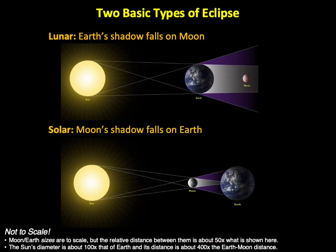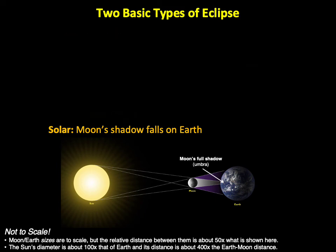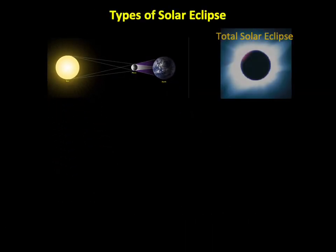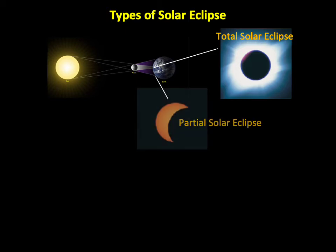Let's return to the two basic types of eclipse. Much as a total lunar eclipse occurs when the Moon is in Earth's full shadow, a total solar eclipse occurs when Earth is touched by the Moon's full shadow. However, because the Moon is much smaller than Earth, its shadow is also small compared to Earth. This explains the variations we see among solar eclipses. You can see a total solar eclipse only if you are within the small total shadow, while the larger surrounding region will be in the partial shadow and therefore will have a partial solar eclipse.